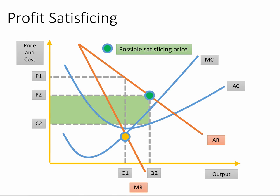A third objective is sometimes called profit satisficing. There's no unique satisficing price or output — there's a whole range. It could be anywhere between the profit-maximising price P1 through to the growth-maximising price. Any price along this range of the demand curve is a possible satisficing price. This firm is basically saying: we'll produce Q2, sell at price P2 — there are our costs, the green area is the tidy profit. It's not the biggest profit we can make, but it's enough to satisfy our shareholders and get ourselves a decent bonus at the end of the year.